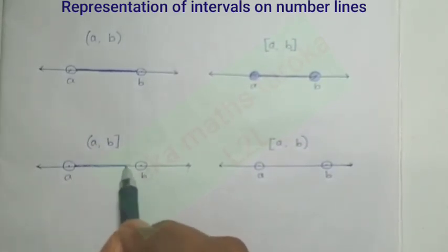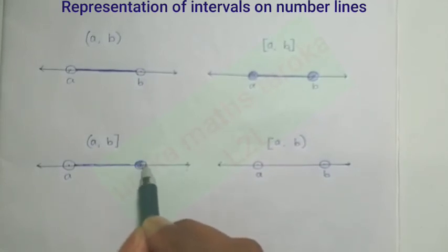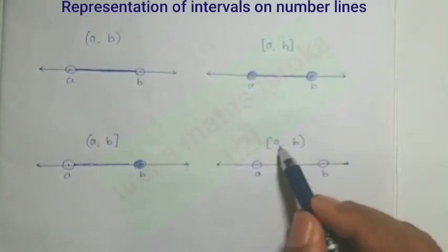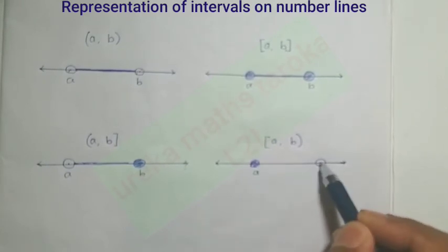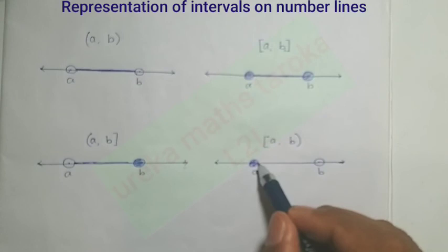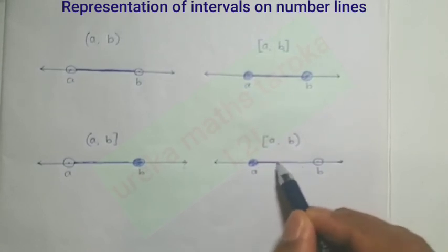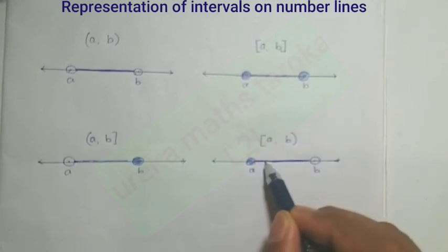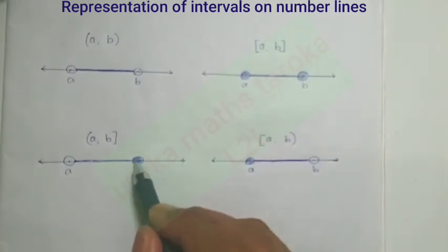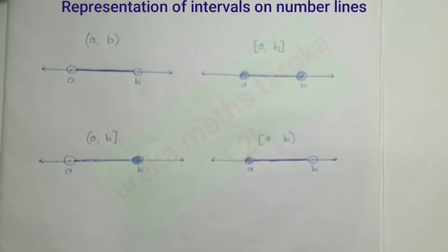For the semi-closed interval, one endpoint is closed with a filled circle and the other is open with an open circle. This is the way of expressing intervals on a number line. That is all, thank you.